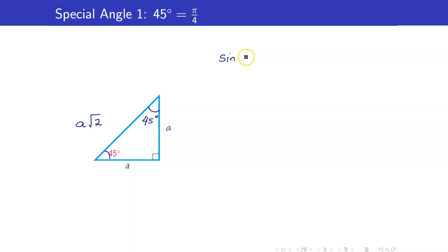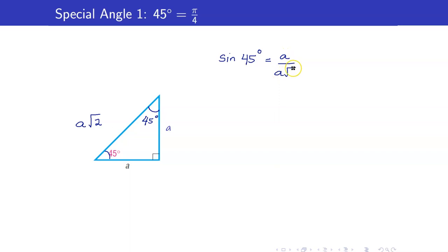Now we can compute sine of 45 degrees. Sine is opposite over hypotenuse, so that's A over A square root of 2, which simplifies to 1 over square root of 2.